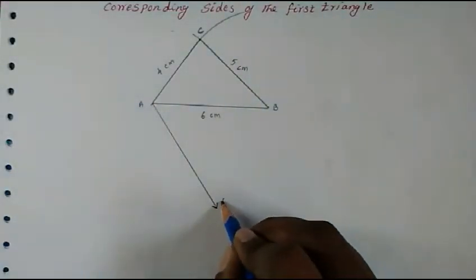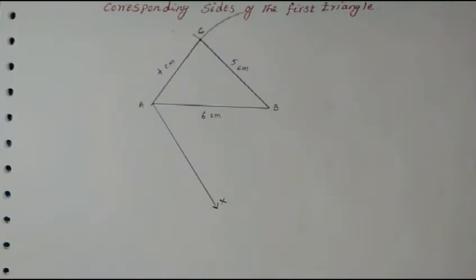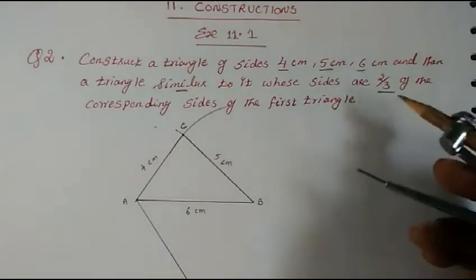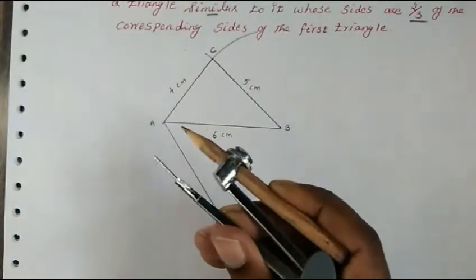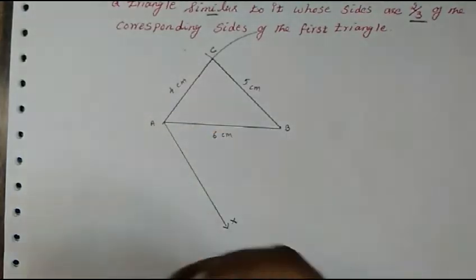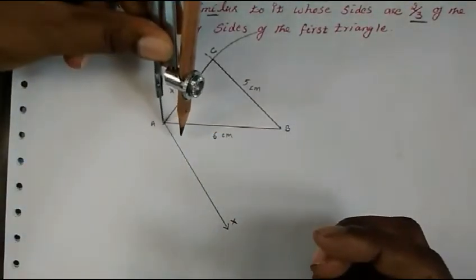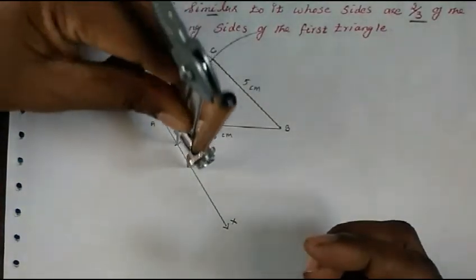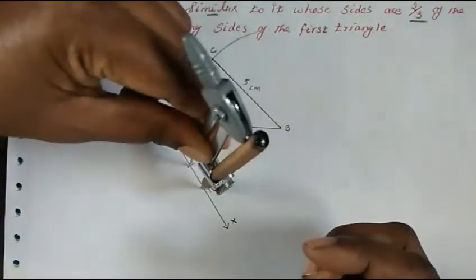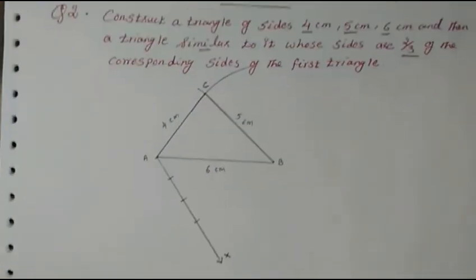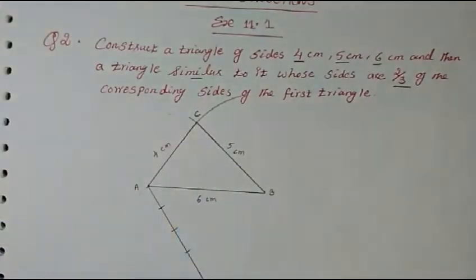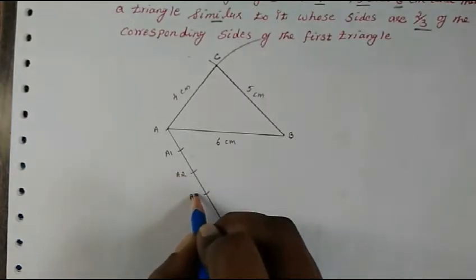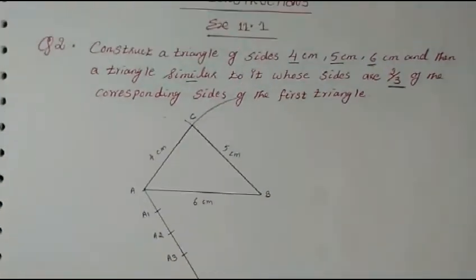Name the ray as X. We have to divide it into equal parts — the biggest number is 3, so we make 3 parts. Take any measure in your compass and divide into 3 equal parts: one, two, three. After doing this, we name them A1, A2, A3.